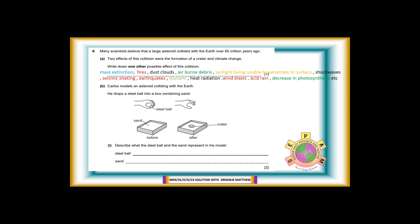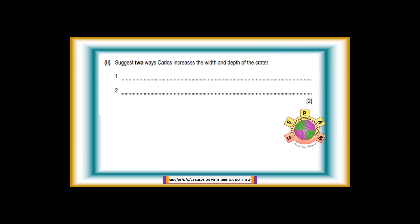Carlos models an asteroid colliding with the Earth. He drops a steel ball into a box containing sand. 6b-1: Describe what the steel ball and the sand represent in his model. For 2 marks. Answer: Steel ball represents asteroid while sand represents surface of the Earth. 6b-2: Suggest two ways Carlos increases the width and depth of the crater. For 2 marks. Answer: 1. Throw the steel ball. 2. Use a steel ball with more mass. 3. Use a steel ball with a larger diameter. 4. Drop the steel ball from a higher height. 5. Increase density of ball.